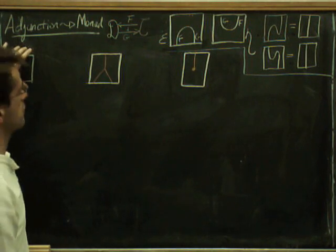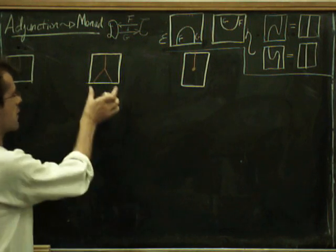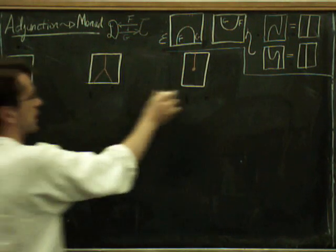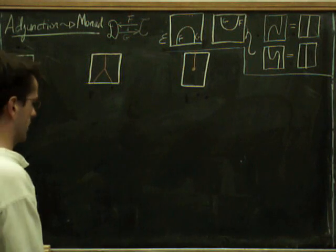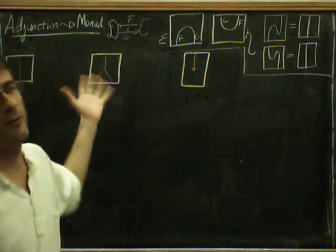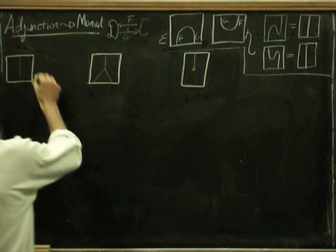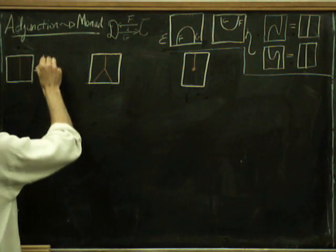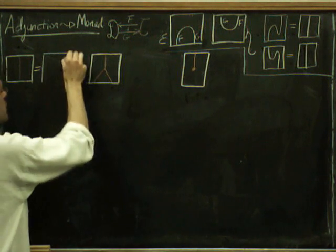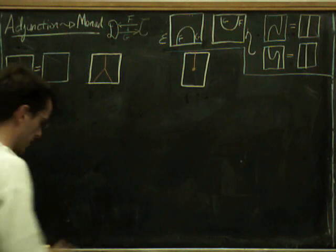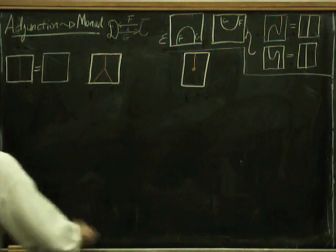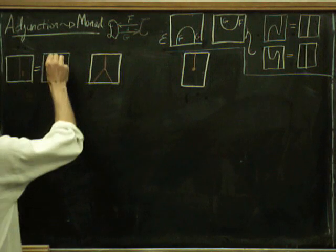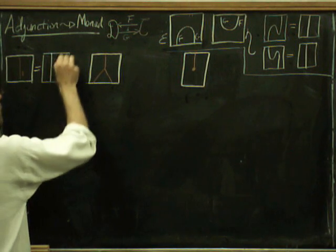A monad was a functor on a category together with two natural transformations — the product and the unit — which are going to satisfy some identities. And it's going to be obvious what these things are from this setup. What is our T going to be? We've got to produce a monad T from a category to itself — well, you know what it is, it's just GF.